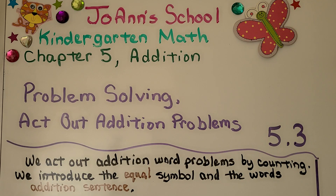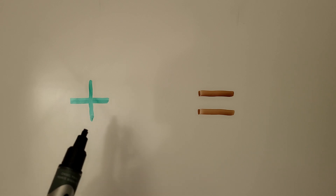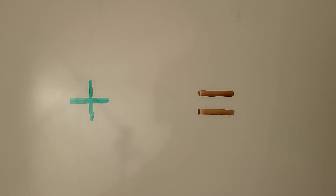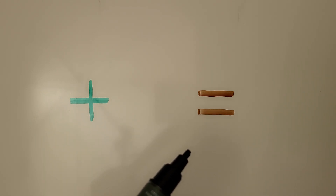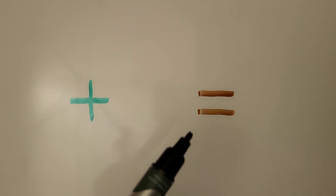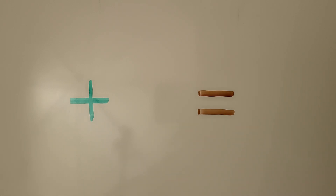Lesson 5.3: Problem Solving - Act Out Addition Problems. We're going to act out addition word problems by counting, and we introduce the equal symbol in the words of an addition sentence. This green symbol is called a plus symbol and it tells us to add. This is an equal to symbol — it means 'is the same as' — and we use these symbols when we write an addition sentence.